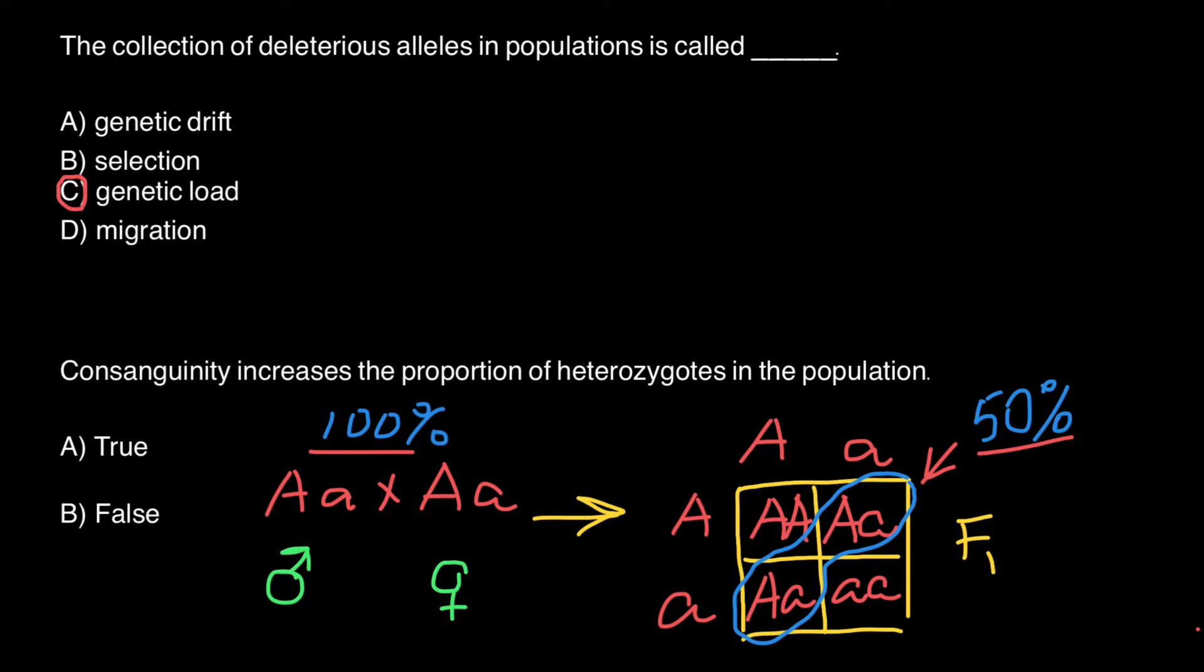That means that consanguinity causes loss of heterozygosity and increase in homozygosity. Loss of heterozygosity is going to be 50% in each generation.